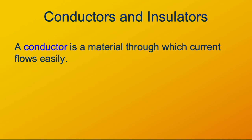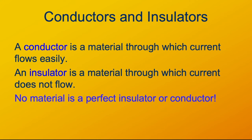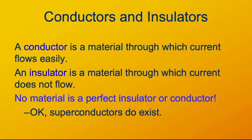A conductor is a material through which current flows; an insulator is one through which current does not flow. We've seen this definition before. What we haven't seen before is that we have varying types of conductors or insulators. It turns out there is no such thing as a perfect conductor or a perfect insulator — it's just a matter of degree. Charges flow readily through conductors; charges flow less readily through insulators. There are perfect conductors known as superconductors, which have many applications in technology, but they're not something we often see in our daily lives.